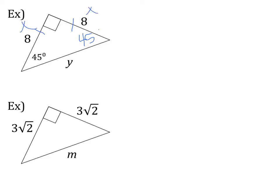So this is x, x, and then our hypotenuse is x square root of 2. Or we can use the word form hypotenuse equals leg root 2.